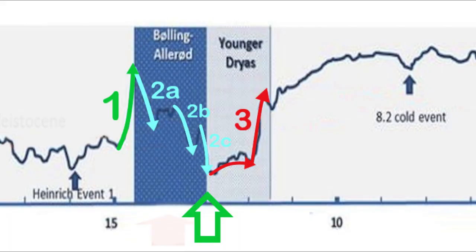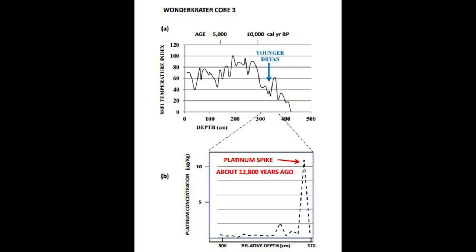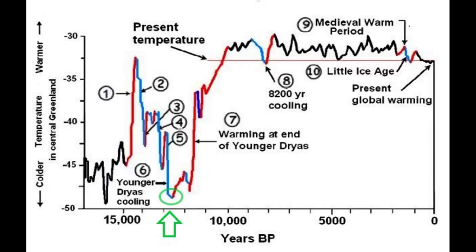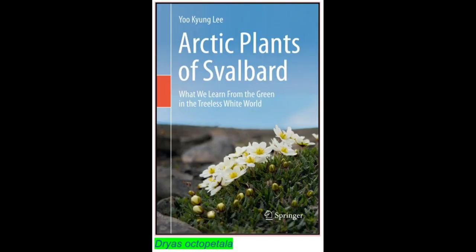That is the hypothesis of a meteorite impact 12,800 BP, which supposedly caused what science and consensus called the Younger Dryas — the period most known as a kind of ice age, and an age when the plant Dryas, Dryas octopetala, was more abundant.